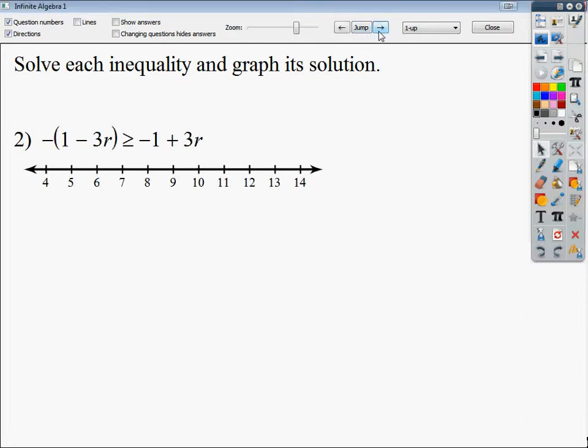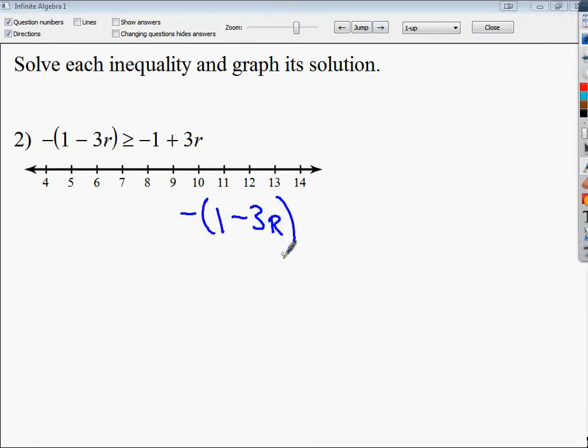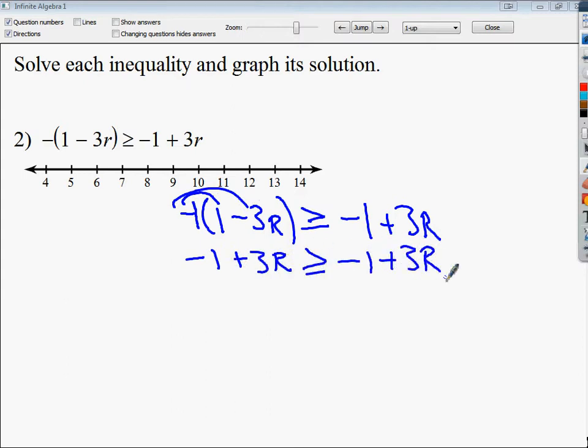The next type is this one. In this case, I get a little bit of a different result. Negative times the quantity 1 minus 3r is greater than or equal to negative 1 plus 3r. I'm going to distribute a negative 1. If you don't see it there, it's there anyway. Negative 1 times 1 is negative 1, and then I've got plus 3r. From here, I tend to move the variable term. The opposite of plus 3r is minus.